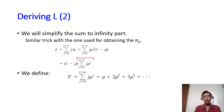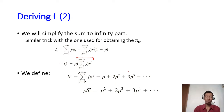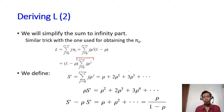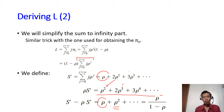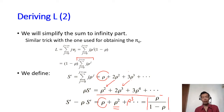What we're going to do is define that summation to become S prime, and then we will multiply S prime with rho to get rho S prime. Then we subtract S prime with rho S prime. This rho term remains intact. 2 rho squared minus rho squared gives us rho squared, and 3 rho cubed minus 2 rho cubed gives us rho to the power of 3, and so on. So the summation of all this is rho over (1 minus rho).